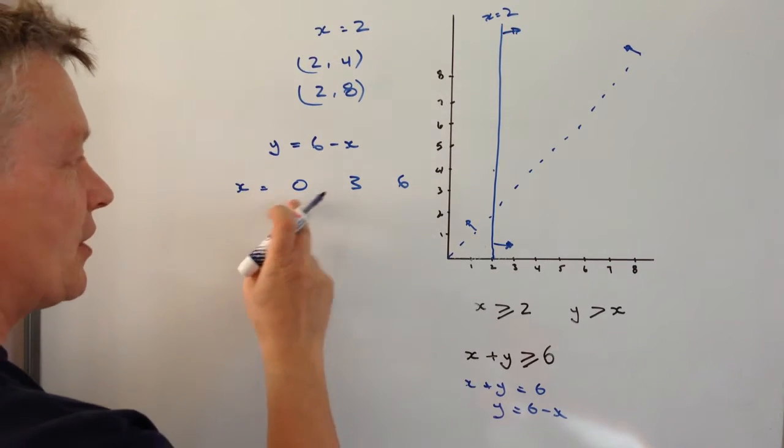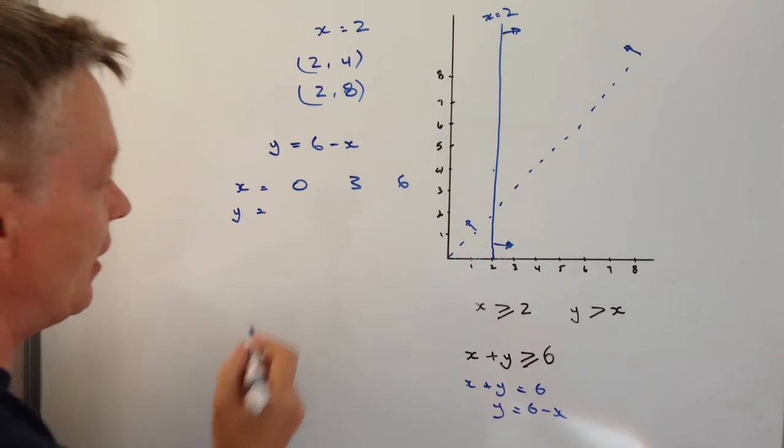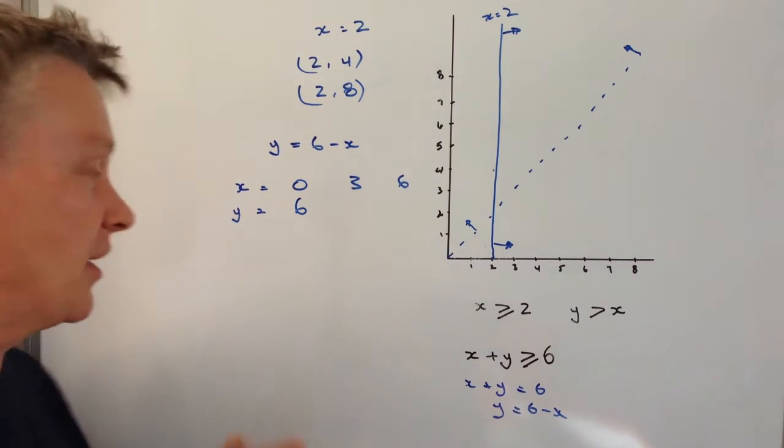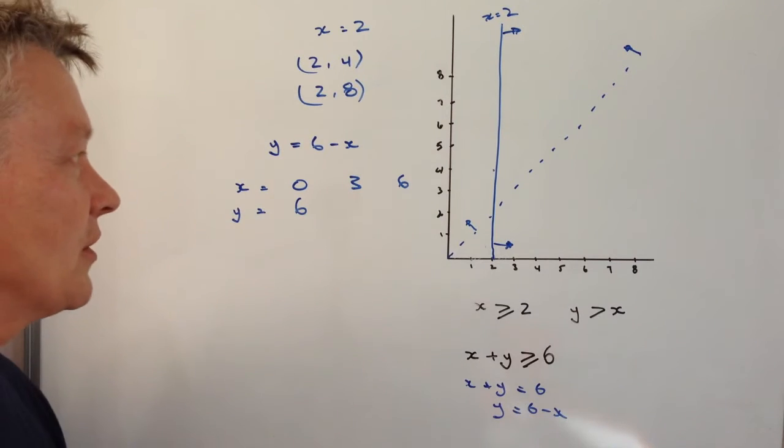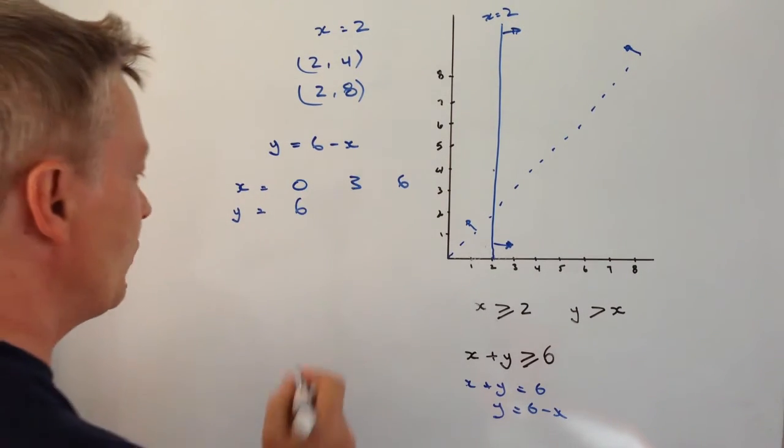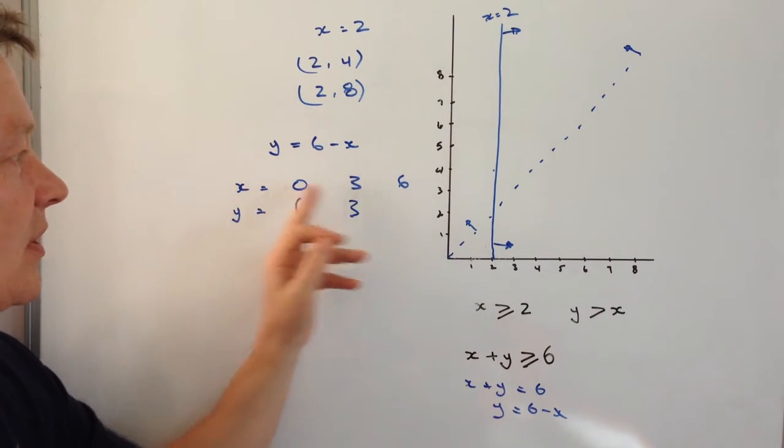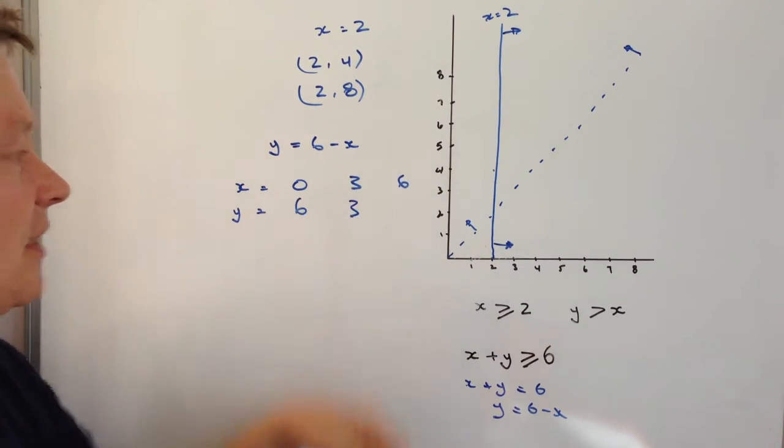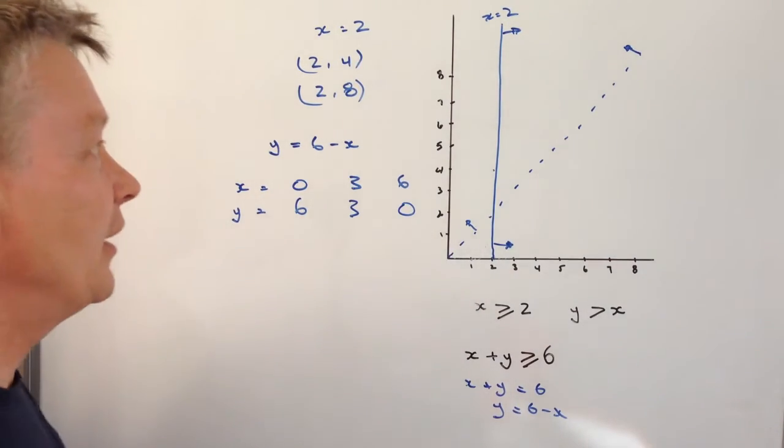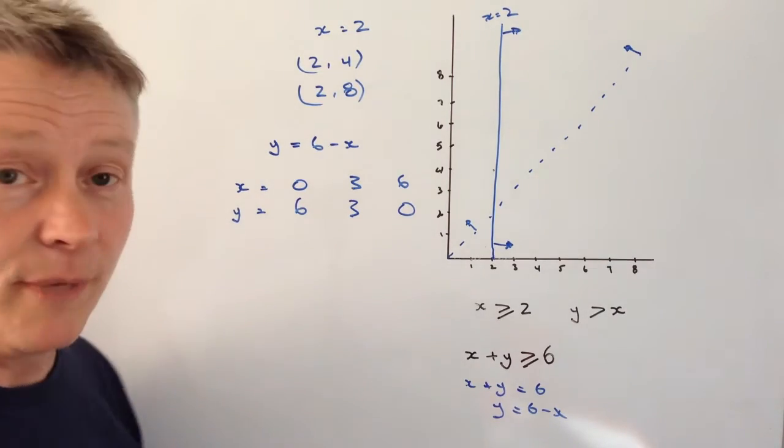And when x equals 0, then y equals 6 minus 0. Well, 6 minus 0 is going to be 6. So when x equals 0, y equals 6. When x equals 3, 6 minus 3 is going to be 3. And when x equals 6, 6 minus 6 is going to be 0. Hopefully you can see that. And if you've worked with linear equations on graphs, that shouldn't be too much of a mystery for you.